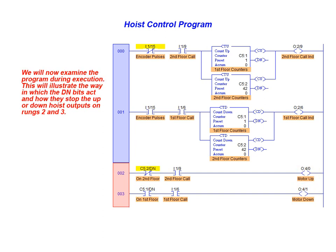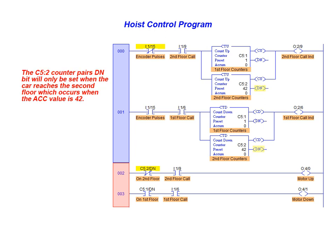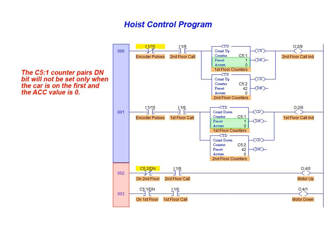We will now examine the program during execution. This will illustrate how the done bits act and how they stop the up or down hoist outputs on rungs 2 and 3. The C5-2 counter pair's done bit will only be set when the car reaches the second floor, which occurs when the accumulated value is equal to 42. The setting of the done bit breaks continuity on rung 2 and the motor hoist up action will be stopped. The only time that the C5-1 counter pair's done bit is unset is when the car is actually on the first floor and the accumulated value is zero. This means that an ongoing hoist down action will be stopped by the continuity being interrupted when the bit is unset on rung 3.